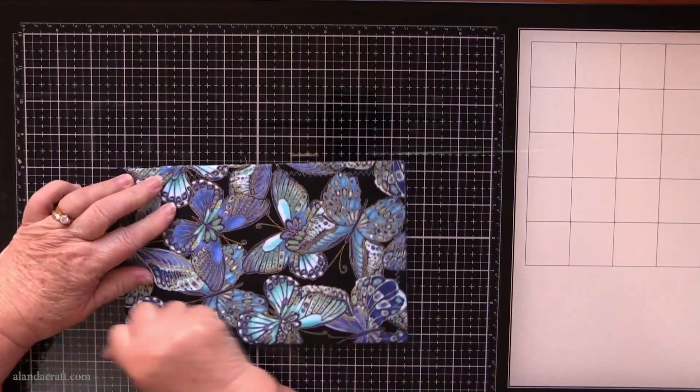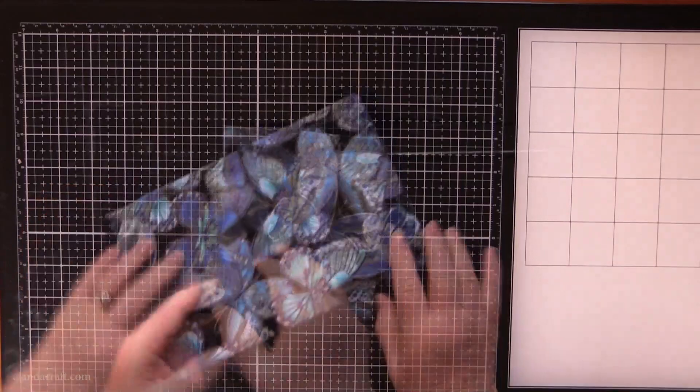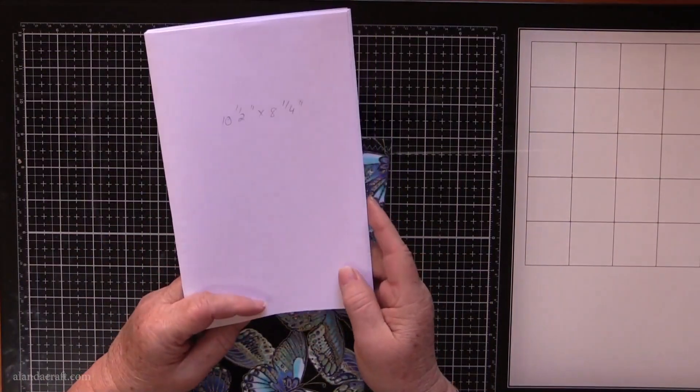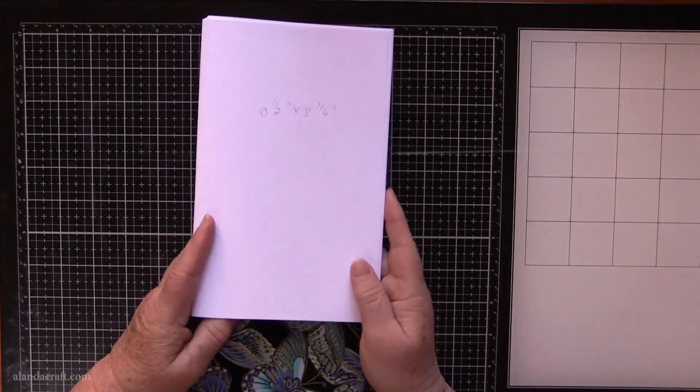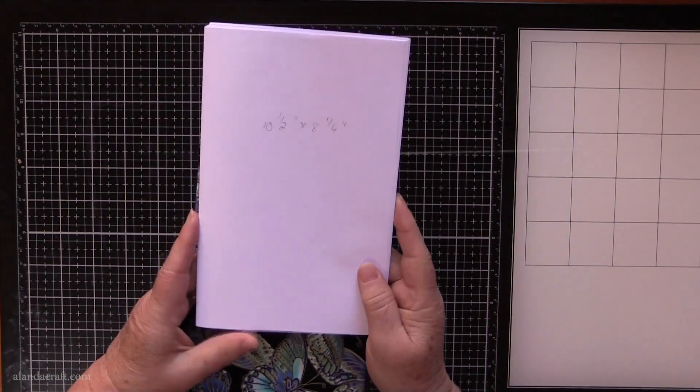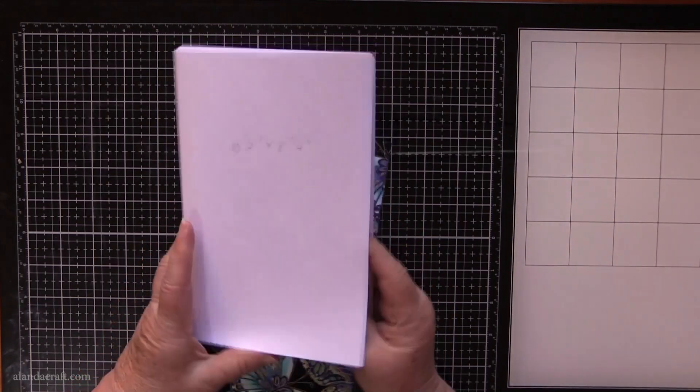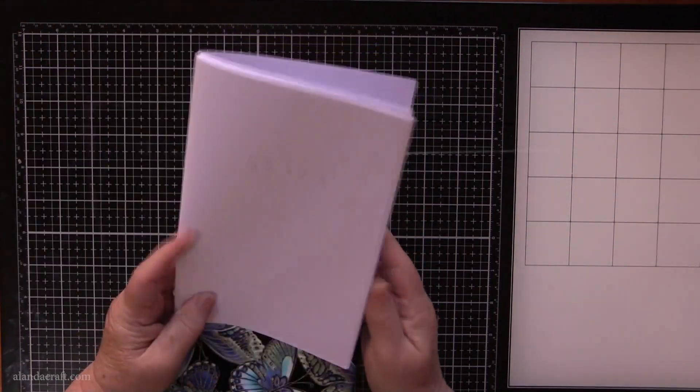Just put a crease in the back edge. I have some paper here - you can use tea dyed paper or any sort of paper that you like but I'm just using printer paper for this exercise. I've cut it to 10 and a half by 8 and a quarter and folded it in half. I've got about 10 pages here.